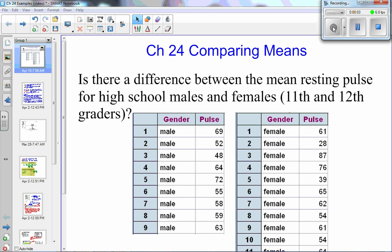Chapter 24 deals with comparing means. So instead of just one sample mean, now we're going to have two independent samples and we're going to compare means by both looking at significance tests and confidence intervals.